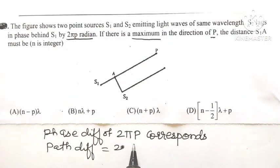So phase difference of 2πp corresponds to path difference of what? Path difference equals λ over 2π times phase difference 2πp.